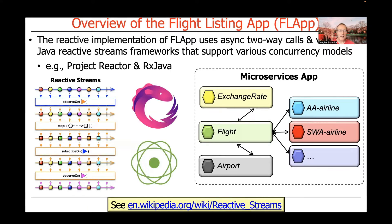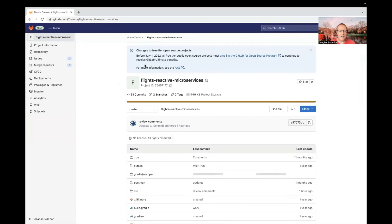Where we're going now is a reactive implementation of FLAP. This version uses asynchronous two-way calls and various Java reactive streams frameworks that support different concurrency models. We have Project Reactor, which is how we work with WebFlux. We could also use RxJava — for client programming on Android, we'd use RxJava on the client side. All the microservices we're implementing will use WebFlux to get a reactive microservices-based approach on the backend. This approach is, of course, very powerful. We'll also cover where you can find the source code for all of this.